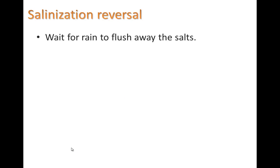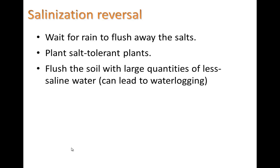What if salinization has already happened? Can you reverse it? One thing you can do is wait for rain to flush away the salts. You can also plant salt-tolerant plants. Part of modern agriculture is developing crop varieties that are more salt tolerant. You can also flush the soil with large quantities of less saline water, though this can lead to water logging, which we already saw can be a problem.